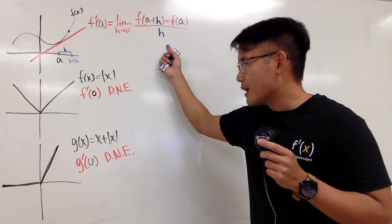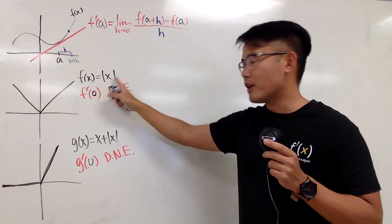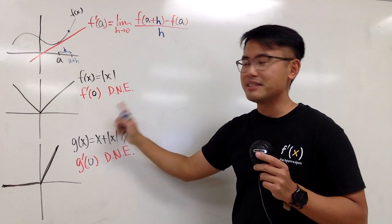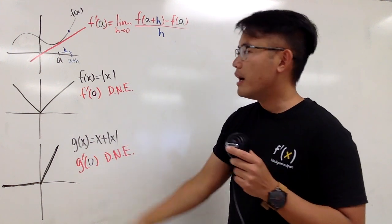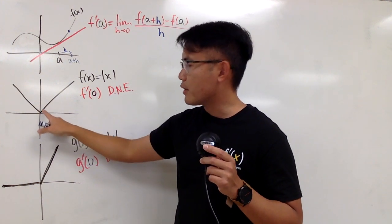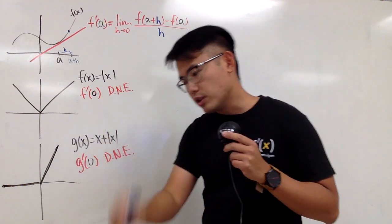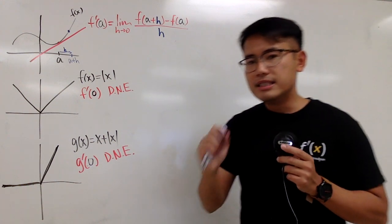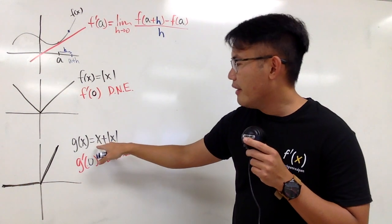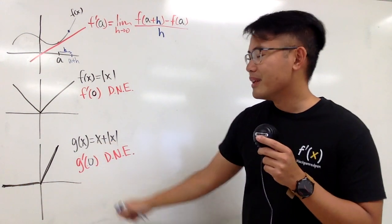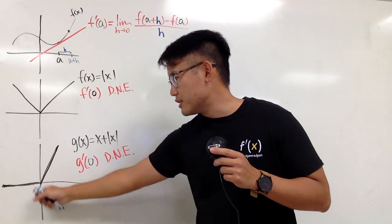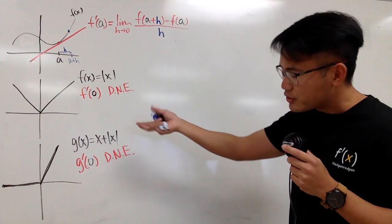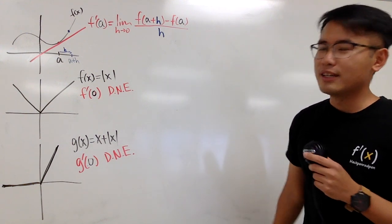Unfortunately, if you have absolute value of x, the derivative of absolute value of x doesn't exist at zero. From the picture you can see that because there is a corner there, so it's not differentiable. If you want to see the detailed explanation, you can check out the video in the description. Similarly, if you have the function x plus absolute value of x, this is also not differentiable at zero — from the picture you can see it because we have a corner. Check out the link in the description for the detailed explanation.